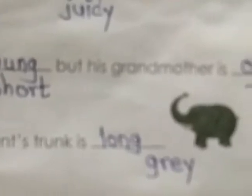We can see the two generations - young and old. We can also say Abdul is short but his grandmother is tall. So we can use two describing words: young/short and old/tall. The elephant's trunk is long and gray - it is definitely long, and it is also gray.